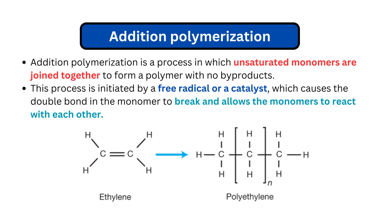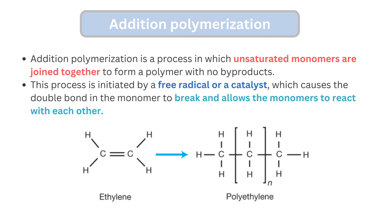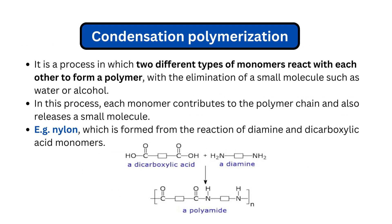A good example of addition polymerization is polyethylene. Here the ethylene monomers are broken down and react with more monomers, forming polyethylene.